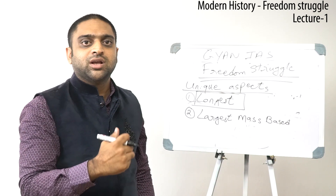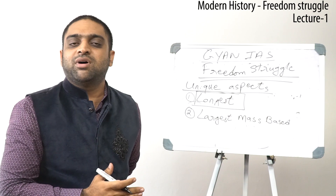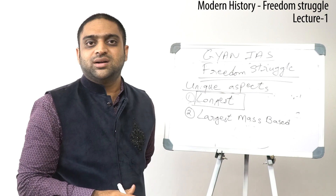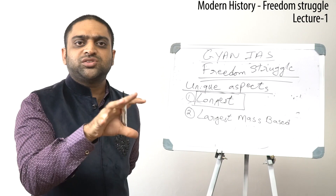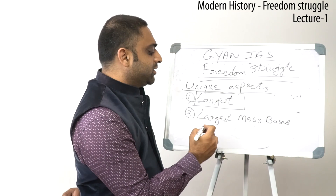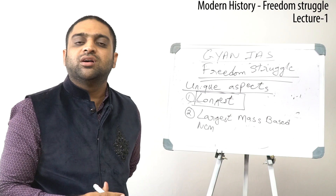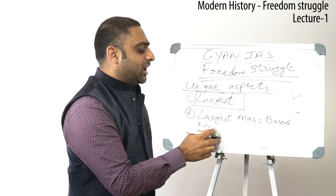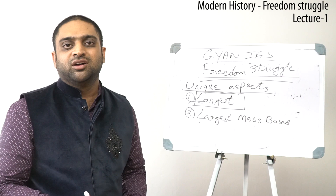The third phase of our freedom struggle starts in 1915 onwards when Mahatma Gandhi came to India. He took the freedom struggle to the grassroot levels, to the village levels, through his movements — the Champaran Satyagraha, the Kheda Satyagraha, the Ahmedabad mill workers' strike. Through these, he involved the entire section of Indian people in the freedom struggle. Therefore, by the first movement Mahatma Gandhi started in 1920 — the Non-Cooperation Movement — the entire population was involved. Even today we are the second largest populated country in the world, and therefore our freedom struggle was the largest mass-based freedom struggle in the entire history of mankind.